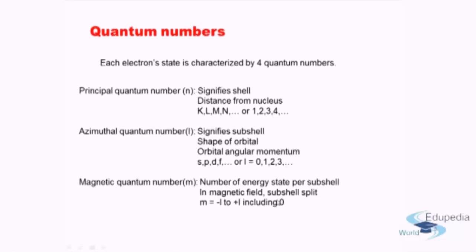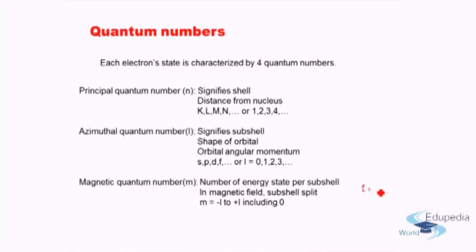The range of the magnetic quantum number m is from minus l to plus l, including zero. For example, if the azimuthal quantum number l is equal to one, then m ranges from minus one to plus one including zero — so m can be minus one, zero, or plus one. If l is two, then m ranges from minus two to plus two including zero. This is the third quantum number used to define an electron in an atom.